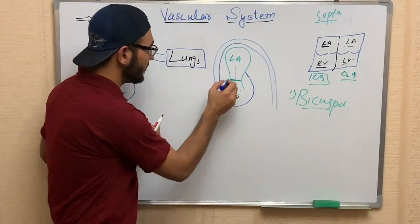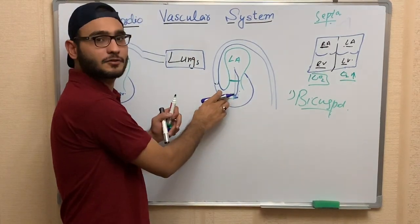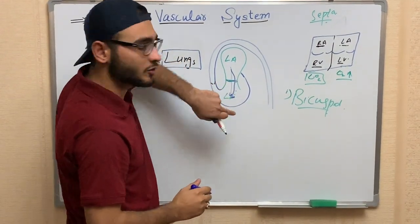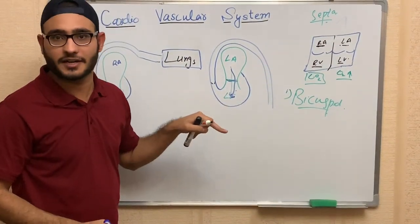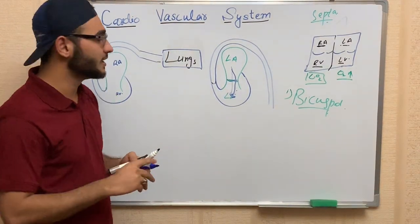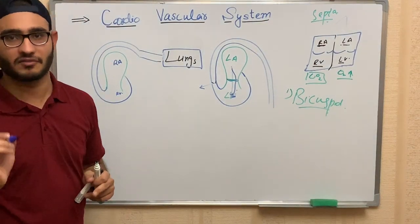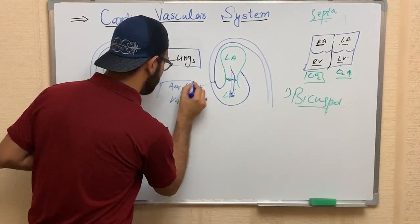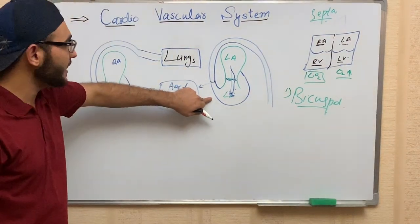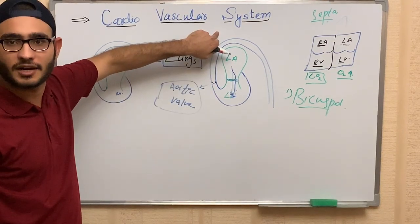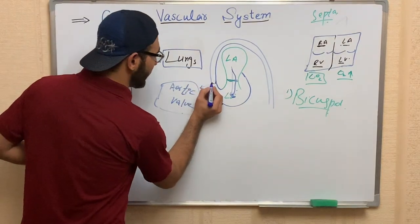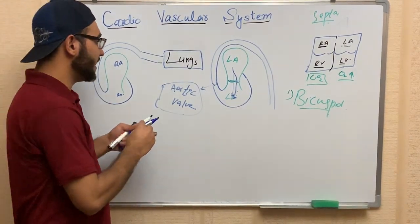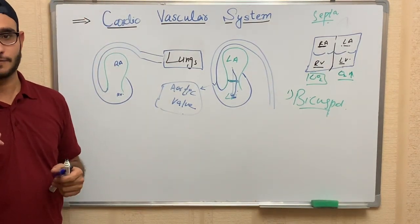When blood enters the left ventricle, the bicuspid valve will close. When the left ventricle contains its maximum volume of blood, there is another valve called the aortic valve. Through this aortic valve, blood from the left ventricle enters the aorta — it is named the aortic valve because the blood goes to the aorta. This valve contains three cusps.